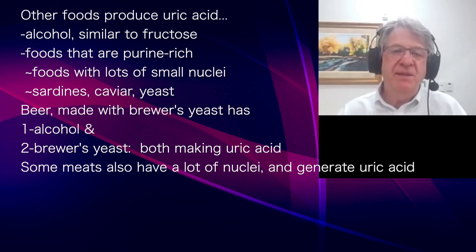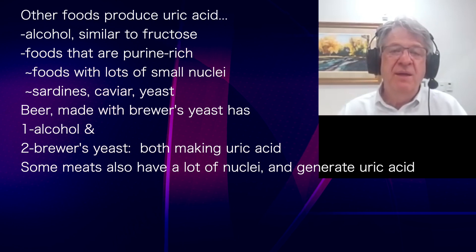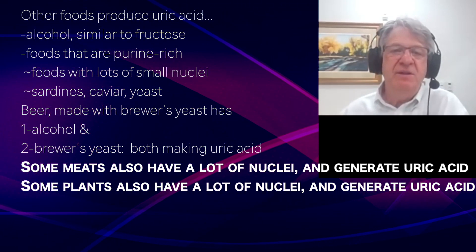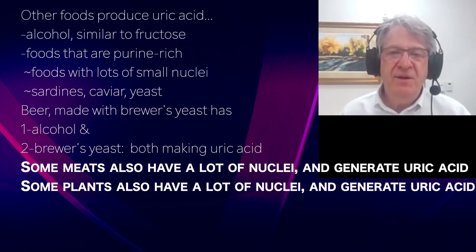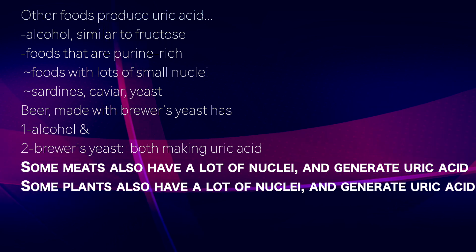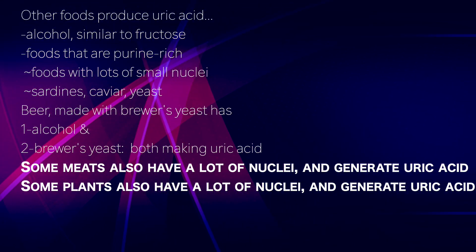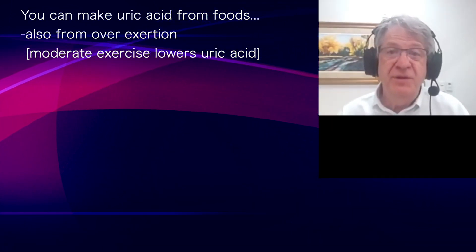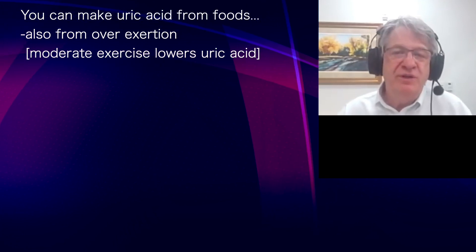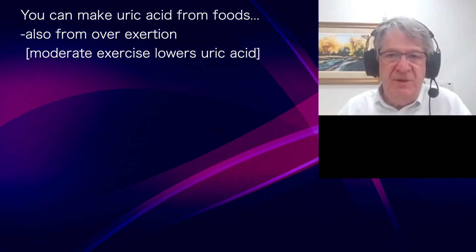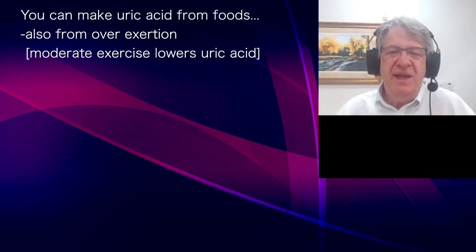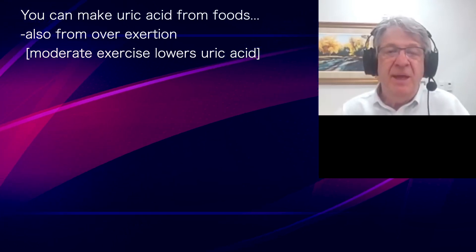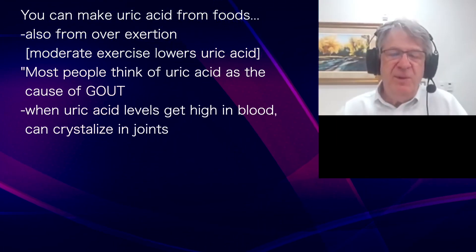Some meats — not all, but some — have a lot of nuclei and can generate uric acid when metabolized. Some plants also have a lot of cellular RNA and can make uric acid. Beyond food, you can produce uric acid from overexertion: during severe exercise, muscles break down a little, releasing DNA. Interestingly, modest exercise actually lowers uric acid.